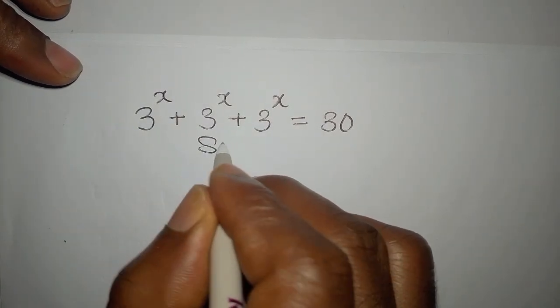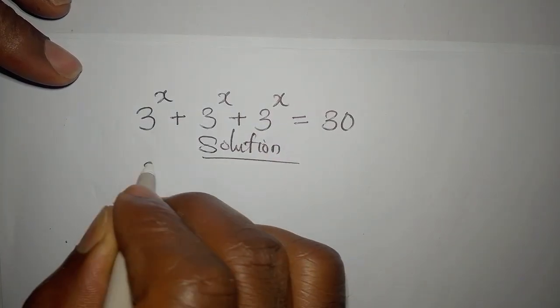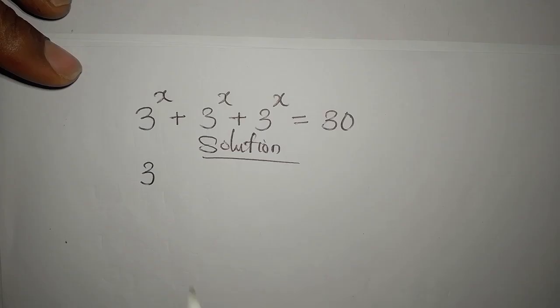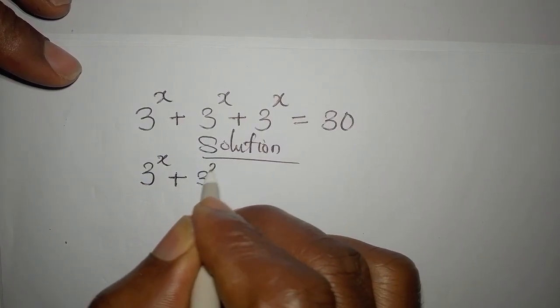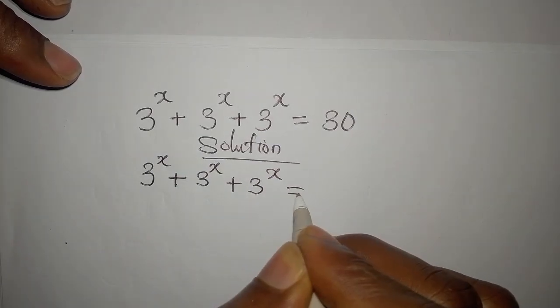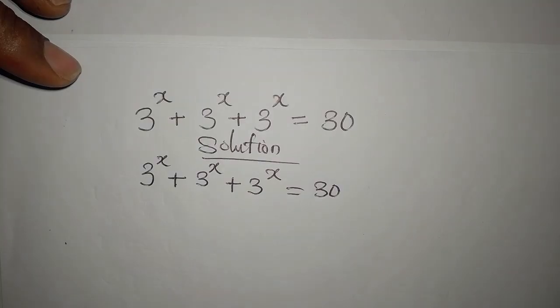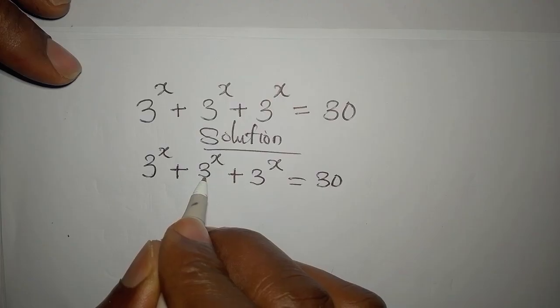Hi everyone, okay let's work on this quickly. 3 to the power of x plus 3 to the power of x plus 3 to the power of x equals 30.